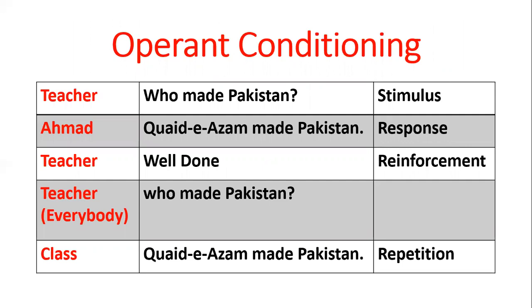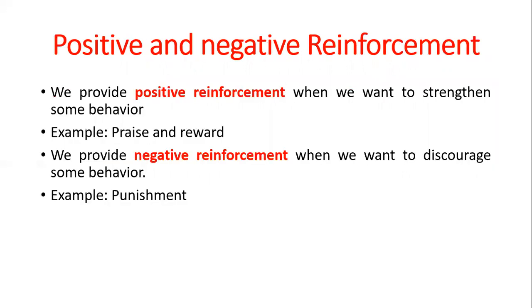In a class, a teacher says 'Who made Pakistan?' — that is a stimulus for the students, a task to respond to. Then a student named Ahmad says 'Quaid-e-Azam made Pakistan' — that was a response. The teacher said 'Well done, good' — that was the reinforcement. Then the teacher asks everybody and the whole class says 'Quaid-e-Azam made Pakistan' — that is repetition. By this process, learning takes place, and this is called operant conditioning.